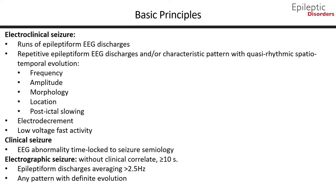An electrographic seizure is any seizure without obvious clinical manifestations. They include epileptiform discharges averaging greater than 2.5 Hz for greater than or equal to 10 seconds, or greater than 25 discharges in a 10-second epoch, or any pattern with a definite evolution in greater than or equal to 10 seconds. The frequency can slow down and would still count.